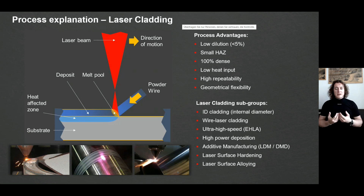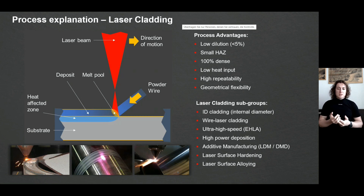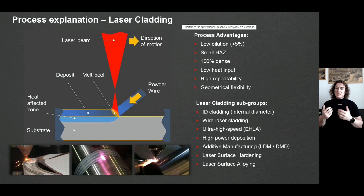However, in laser cladding we talk not about joining two materials together — we talk about overlaying. We try to give a certain protection to a substrate, and this can be done with many different purposes. One of them is to improve wear resistance or corrosion resistance of our surface, for a material which might be cheap and require certain improvement in properties.